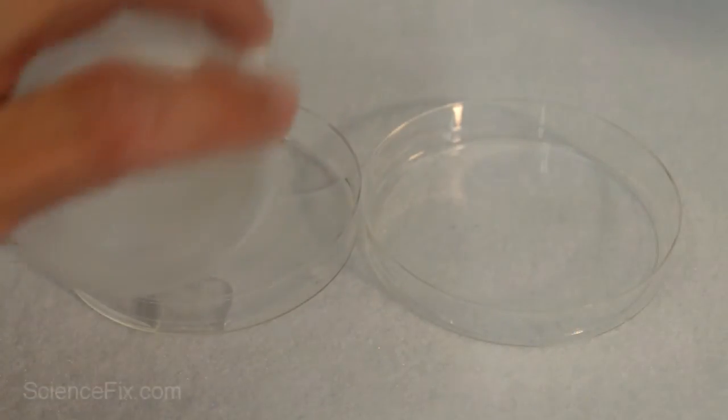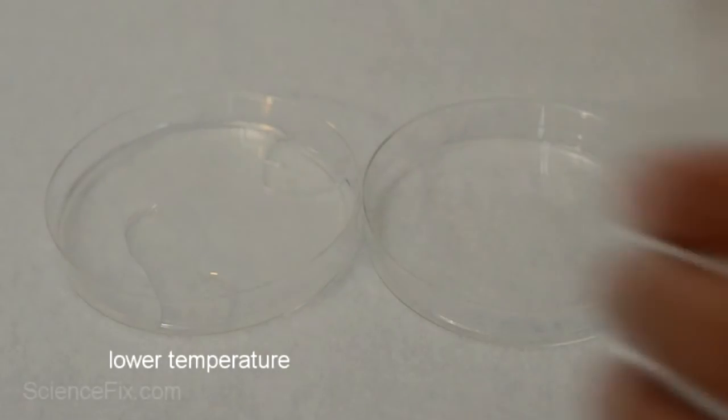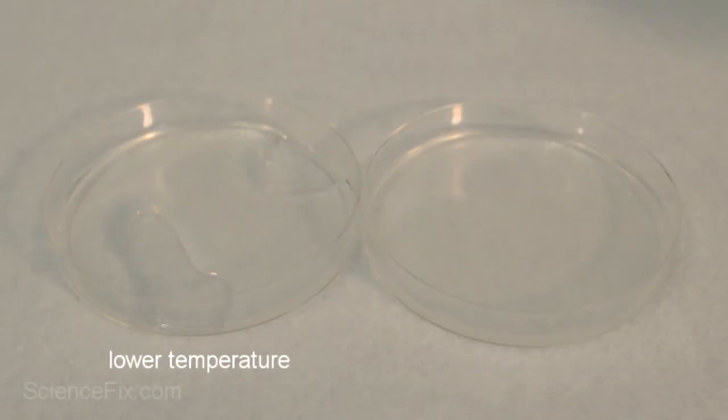In the left petri dish, we're going to put the reactants in and mix them together. This time, the temperature is going to be a lower temperature, and on the right, the same reactants at a higher temperature. Let's see what happens.